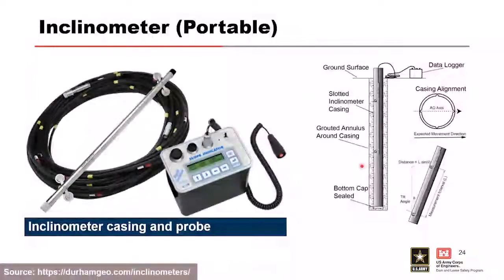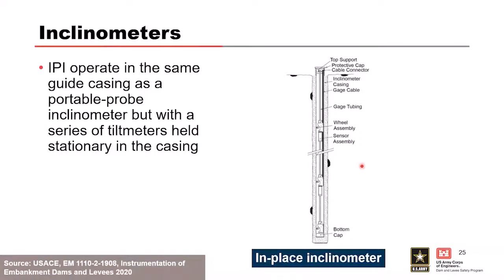Manual inclinometer readings are typically taken every two feet, which takes a long time for a deep installation. For an in-place inclinometer — the more automated option — servo accelerometers or individual tilt sensors are strung about every two feet and left in place in the casing. The reading is taken from the surface without dropping the manual device in each time. You lower the device to the bottom and take readings as you pull it out every two feet.